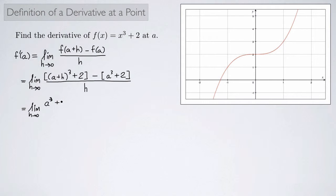So it's going to be a cubed plus 3 a squared h plus 3 a h squared plus h cubed and then plus 2. And then I have minus a cubed minus 2. Remember to distribute that minus sign right here. This is where a lot of mistakes tend to creep in is forgetting to distribute that minus sign. All of this over h.